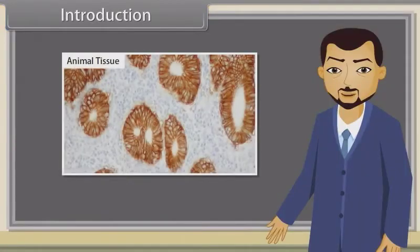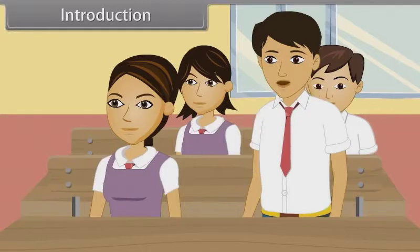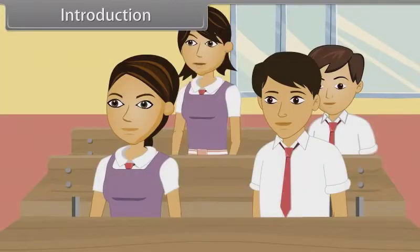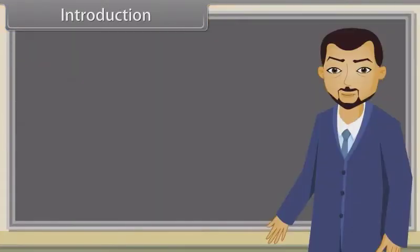All the animals are made up of tissues. How many kinds of tissues in animals are present? There are four types of animal tissues. Are the organs in the human body also made of tissues? Yes. In this lesson, you will learn animal tissues and the organs.